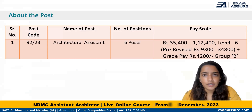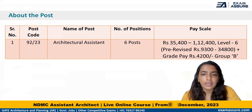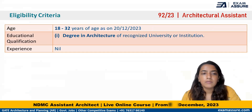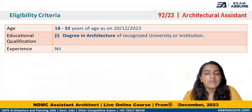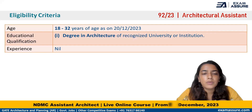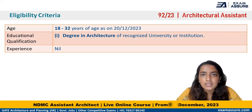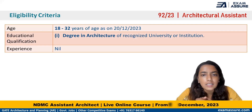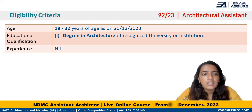The post is for that of an Architectural Assistant with 6 vacancies. As far as the eligibility criteria is concerned, the candidate should be of age between 18 to 32, as on 20th December 2023, which will be the last date for application for the post.